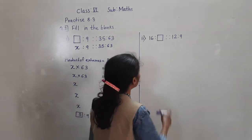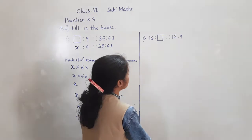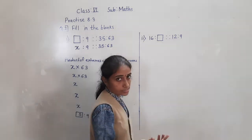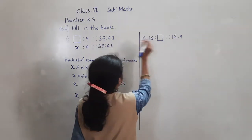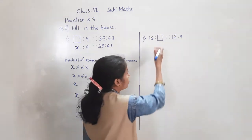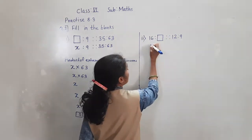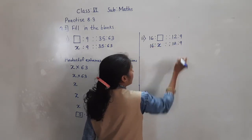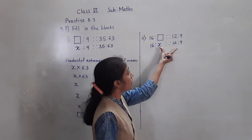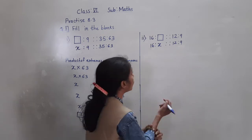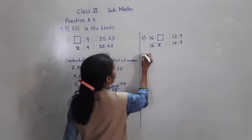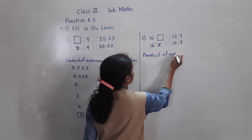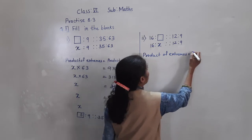Now let's solve the next example. 16 is to blank box, proportion 12 is to 9. So in the place of blank box, what we will take? X. We have to find that value. Fill in the blank means what number will come - we have to find. So we don't know this number, so we write X. So 16 is to X, proportion 12 is to 9. These are the outer terms and these are the inner terms. So product of extremes is equal to product of means.